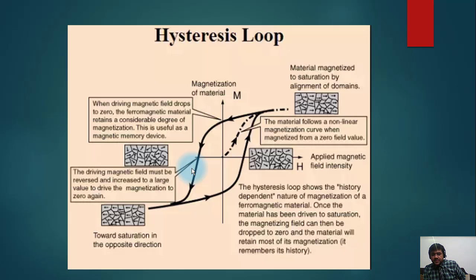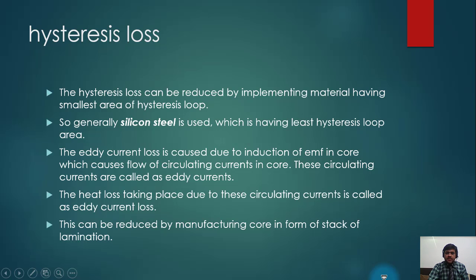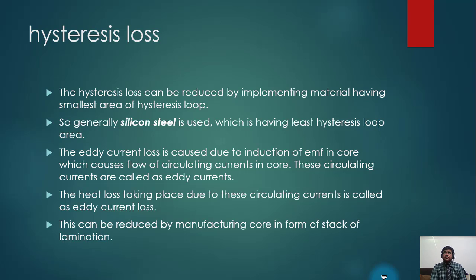The hysteresis loop shows the history-dependent nature of magnetization of ferromagnetic material. Once the material has been driven to saturation, the magnetizing field can be dropped to zero and the material will retain most of its magnetization — it is like remembering history. The solution is to add silicon to the core material. Silicon softens the core, which helps in resetting the residual magnetism, thereby reducing hysteresis loss.